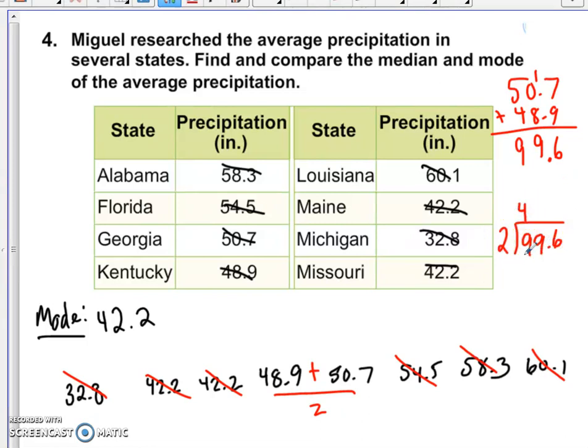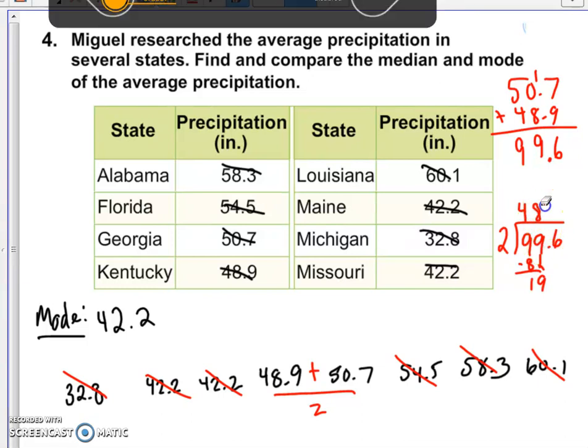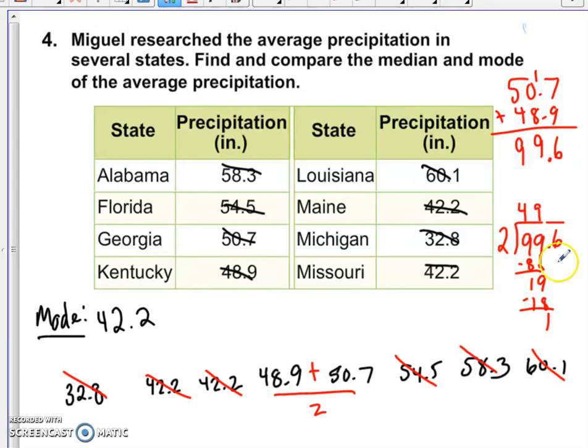2 goes into 9 four times with a remainder of 1. 2 goes into 19 nine times with a remainder of 1. And 2 goes into 16 exactly eight times. So it looks like our mode was 42.2 and our median is 49 and 8 tenths.